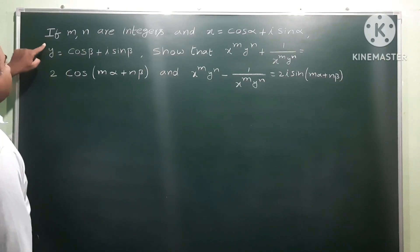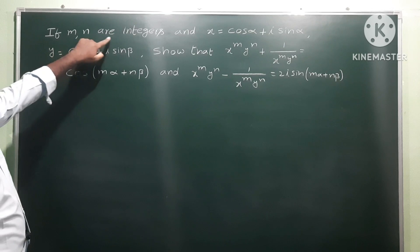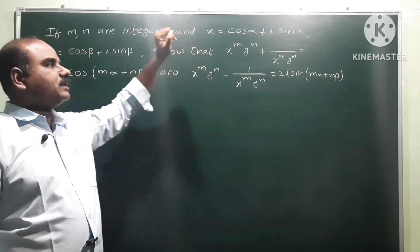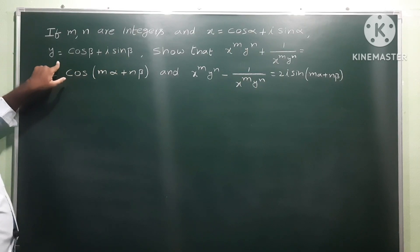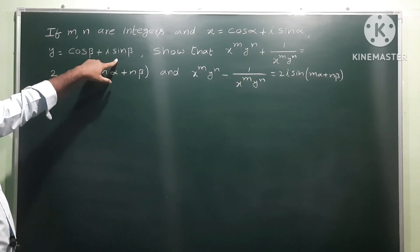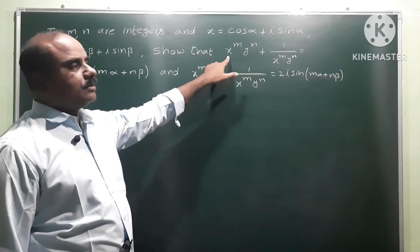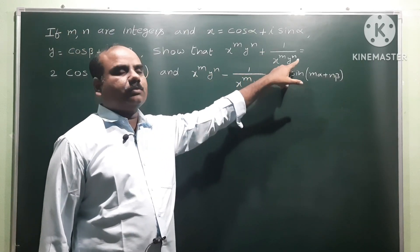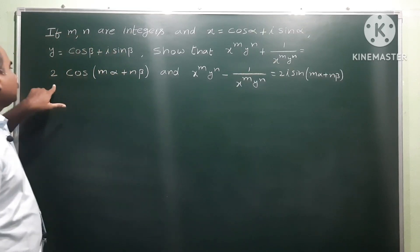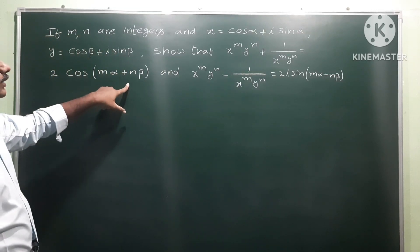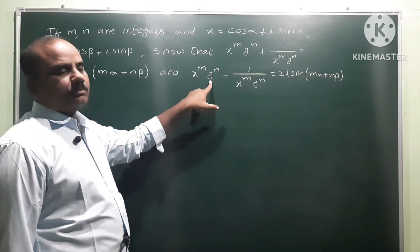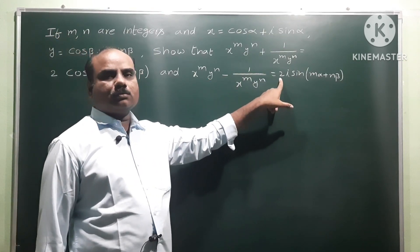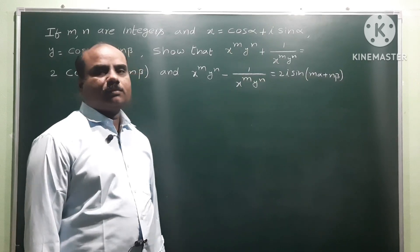Okay, next problem. If m, n are integers and x is equal to cos α plus i sin α, y is equal to cos β plus i sin β, show that x^m · y^n + 1/(x^m · y^n) is equal to 2 cos(mα + nβ), and x^m · y^n − 1/(x^m · y^n) is equal to 2i sin(mα + nβ).